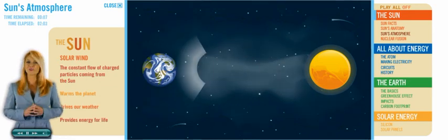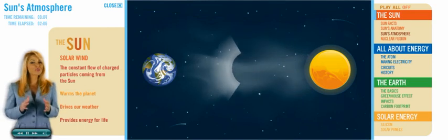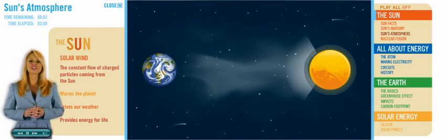The solar wind is the constant flow of charged particles coming from the Sun in all directions. This energy reaches the Earth, where it warms the planet, drives our weather, and provides energy for life.